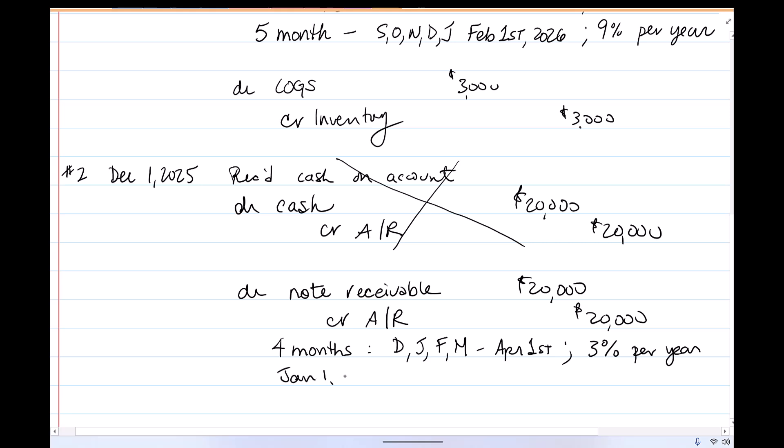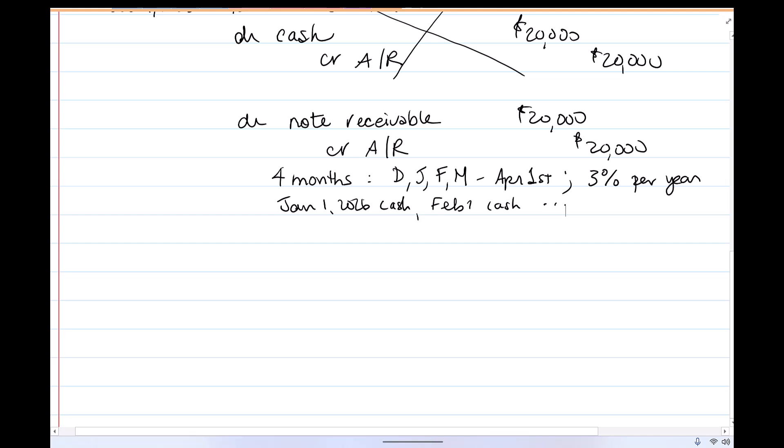So January 1, 2026, they'll pay us cash, February 1 cash, et cetera. But we're here at December 1st. So no more transactions for December until we get to December 31st. This is the company's year end. At this point, we need to accrue anything owing to us and things that we owe to other people. We need to accrue it and put in our financial statements.